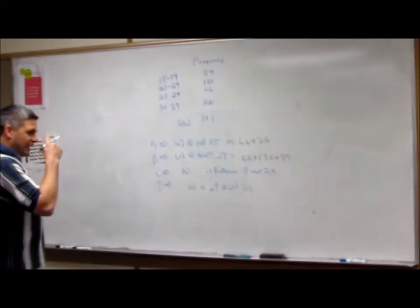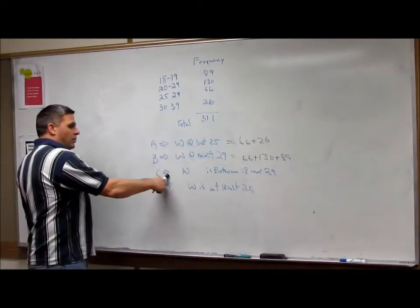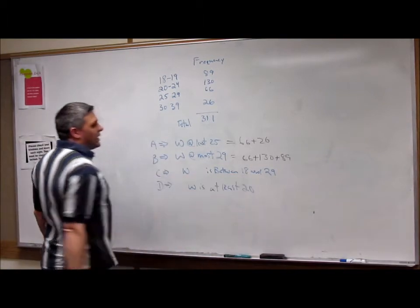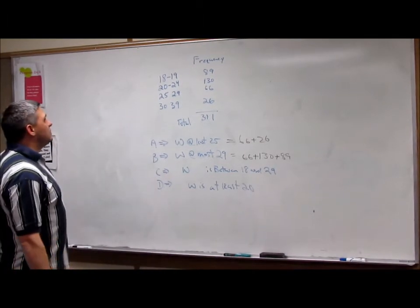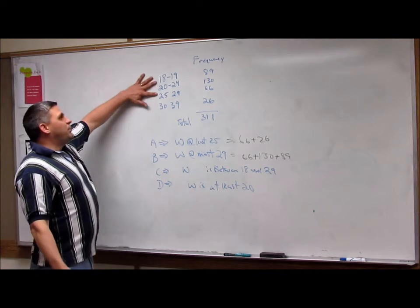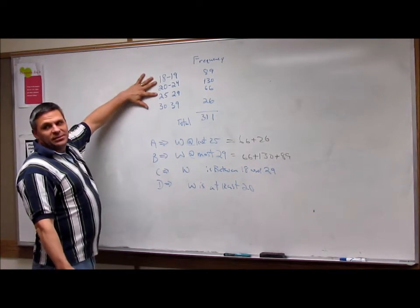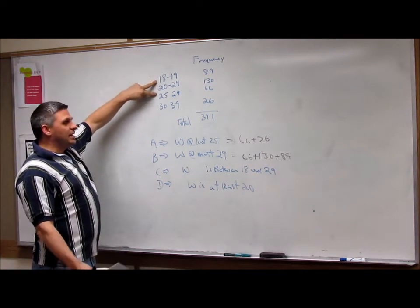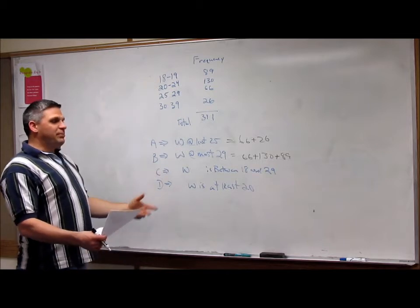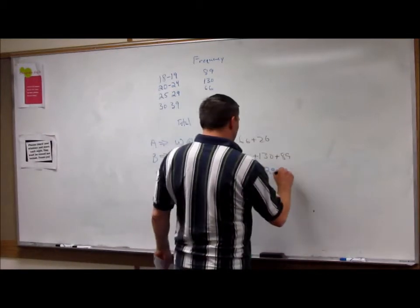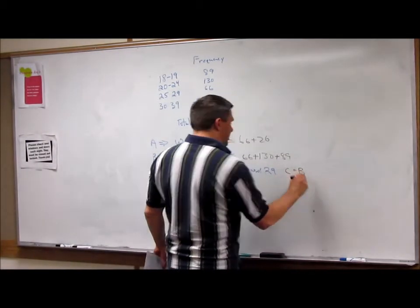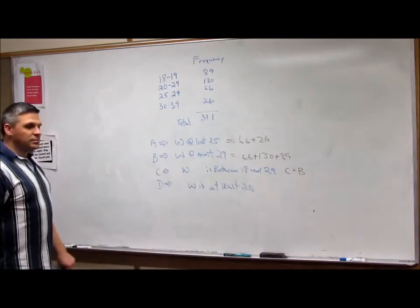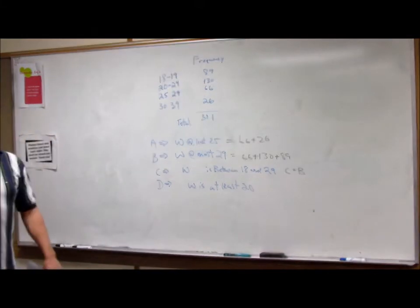Now what about when they say when the woman is between 18 and 29? Well, between 18 and 29 still means this, right? So it's the same as B. So C is equal to B. That's a good thing to know.